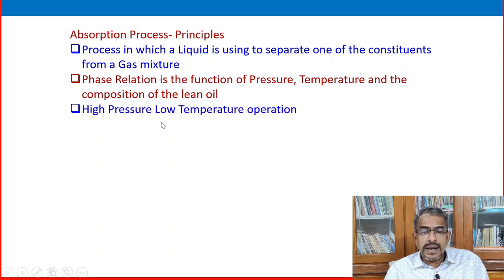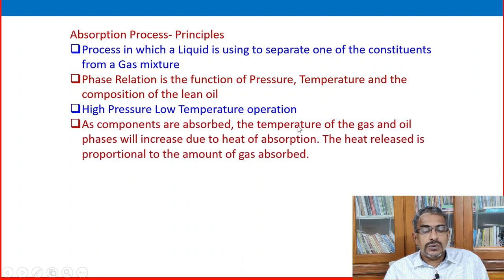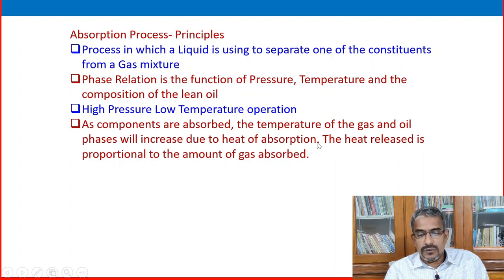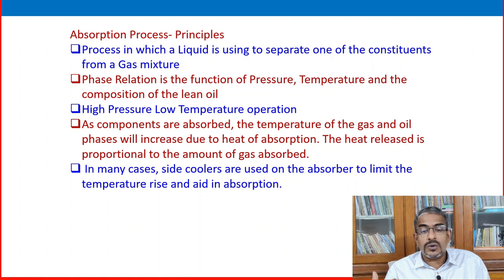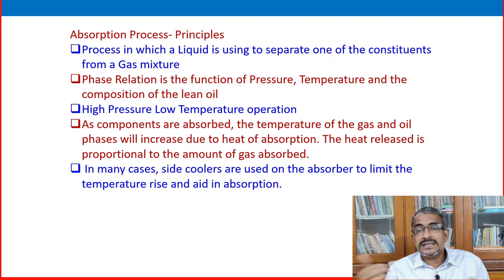Absorption is a high pressure and low temperature operation. The absorber works at high pressure and low temperature. As components are absorbed, the temperature of the gas and liquid phases will increase due to heat of absorption — the heat released is proportional to the amount of gas absorbed. In many cases, side coolers are used in the absorber to limit temperature rise, maintaining the low temperature required.